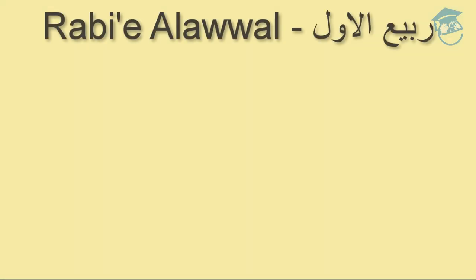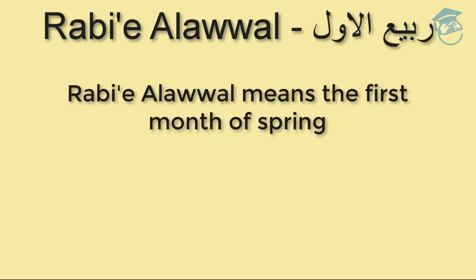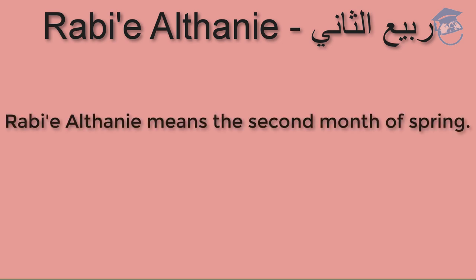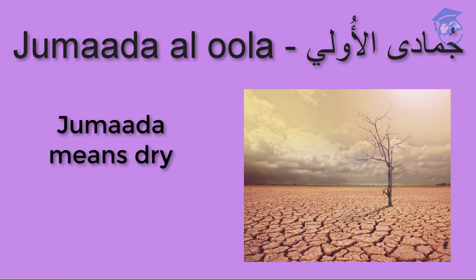The third month of the Islamic year is Rabia al-Awwal. Rabia al-Awwal means 'the first month of spring.' The fourth month of the Islamic year is Rabia al-Thani, meaning 'the second month of spring.' The fifth month of the Islamic year is Jumada al-Ula. Jumada means 'dry' — this was the first month of the drought.